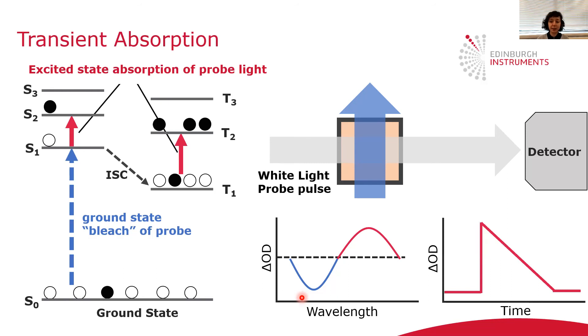Just like in photoluminescence, we can look at delta OD as a function of time to get the relaxation kinetics of the sample.